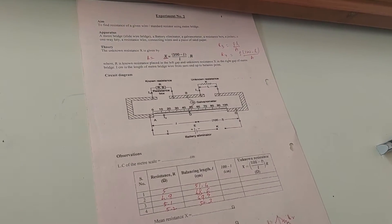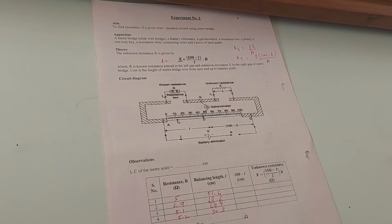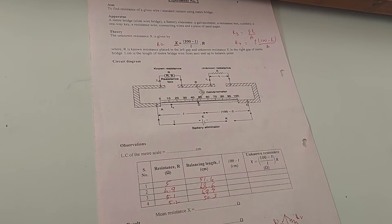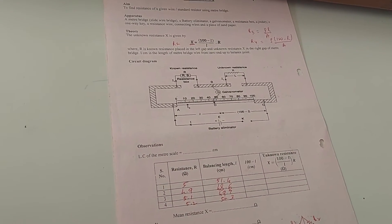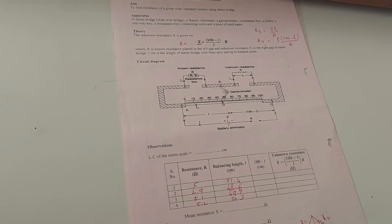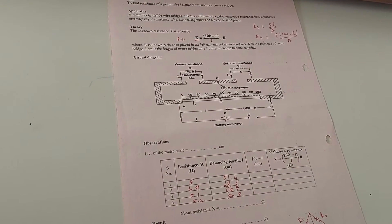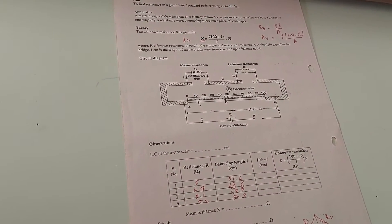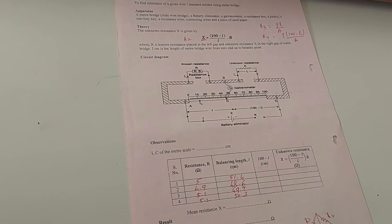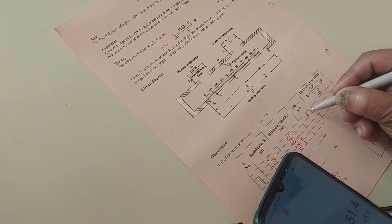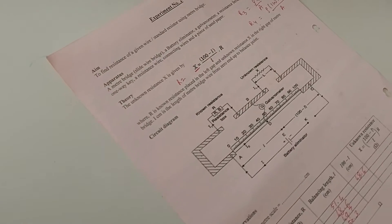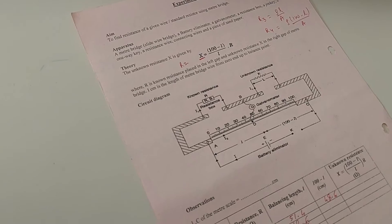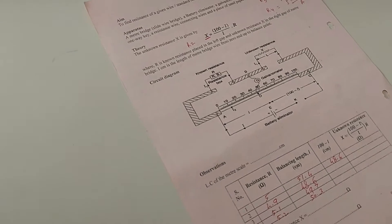Let me tell you a few more things. Number one, why is it necessary not to press the jockey? Because when you press the jockey on the wire, you will tend to compress the wire and change its area of cross section. Remember, one of the conditions that we have taken about the wire is the material remains the same and area of cross section also remains uniform.